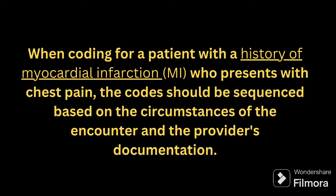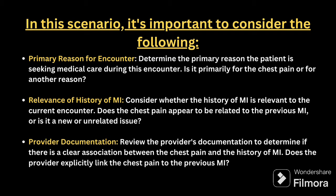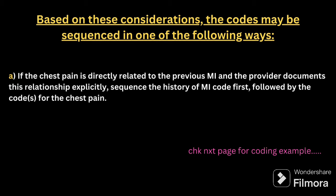Why I have added this question is because most CPC exam people get confused with this. So in this scenario we should consider mainly three things. First one is primary reason for encounter. Second one is relevance of history of MI. Third one is provided documentation. These three things are taken into consideration when assigning the primary code, so we will see how we can code for each one.